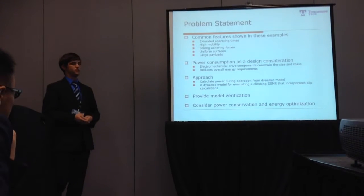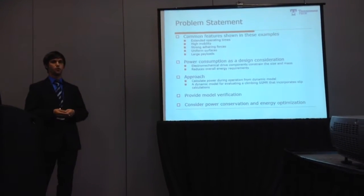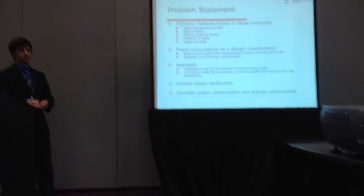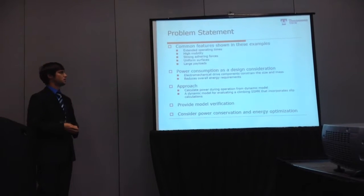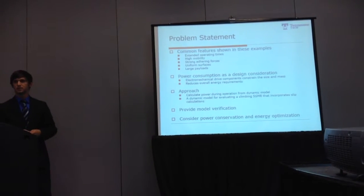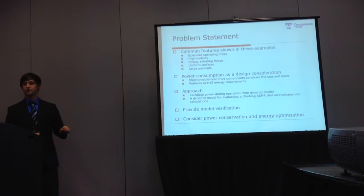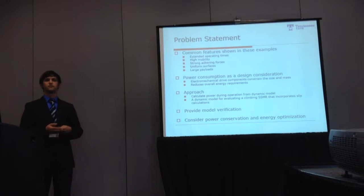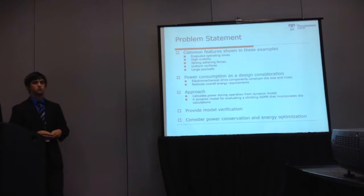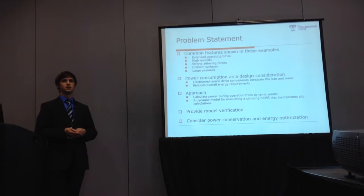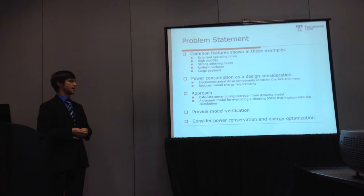A few common features we see between all these tasks is that they all would require the robot to operate for an extended amount of time. They all require high mobility and a high resolution of motion. They all require the robot to have strong adherence forces — in our case, magnetic tracks. All the surfaces are uniform and fairly clean. And lastly, all these robots have the potential to carry large payloads, such as the equipment used for welding or some of the inspection tasks.